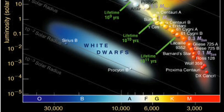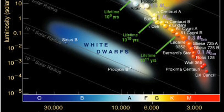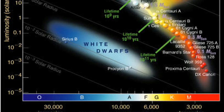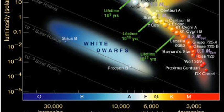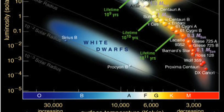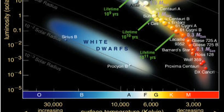At the lower end of the main sequence are red dwarves, which are low mass stars. Low mass stars remain on the main sequence for a long time. These stars have the lowest mass and are among the oldest stars in the universe.